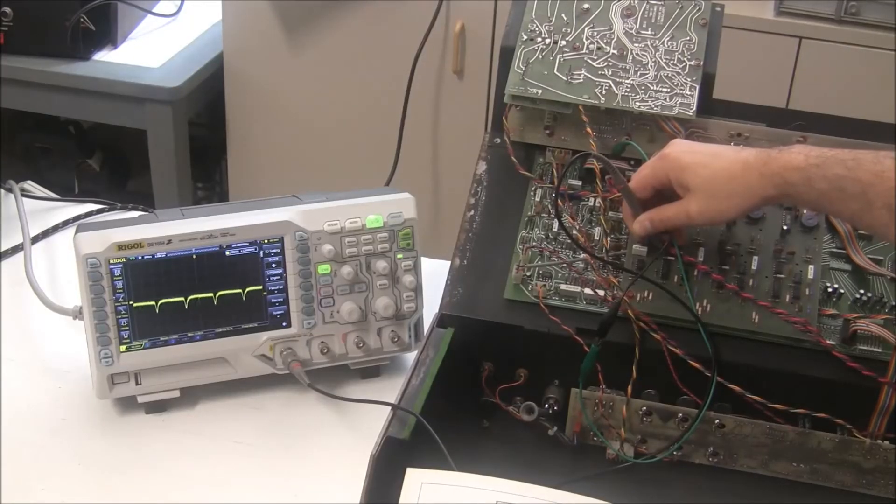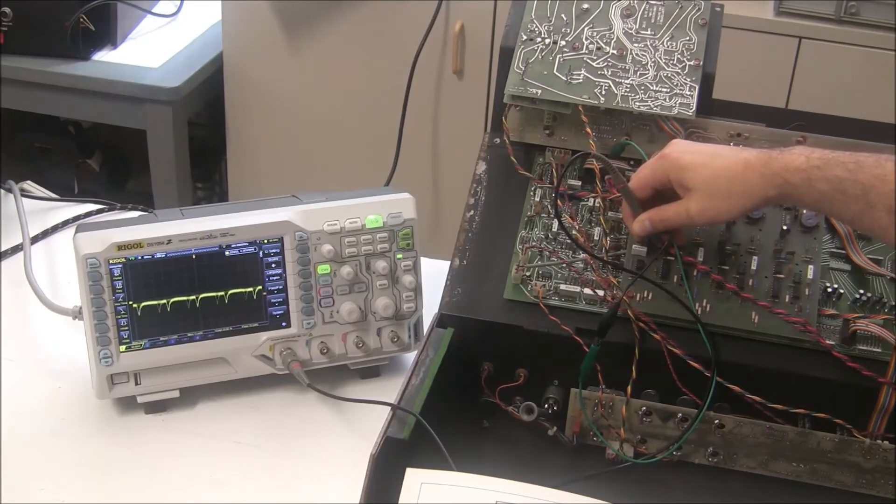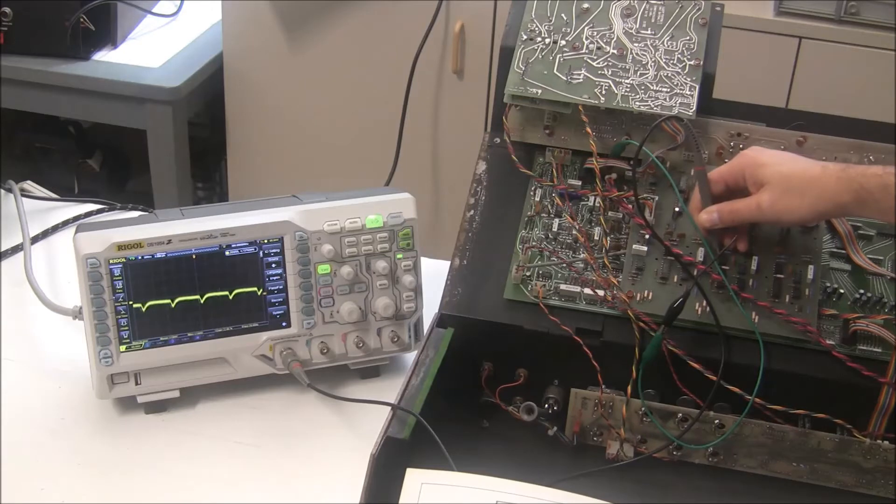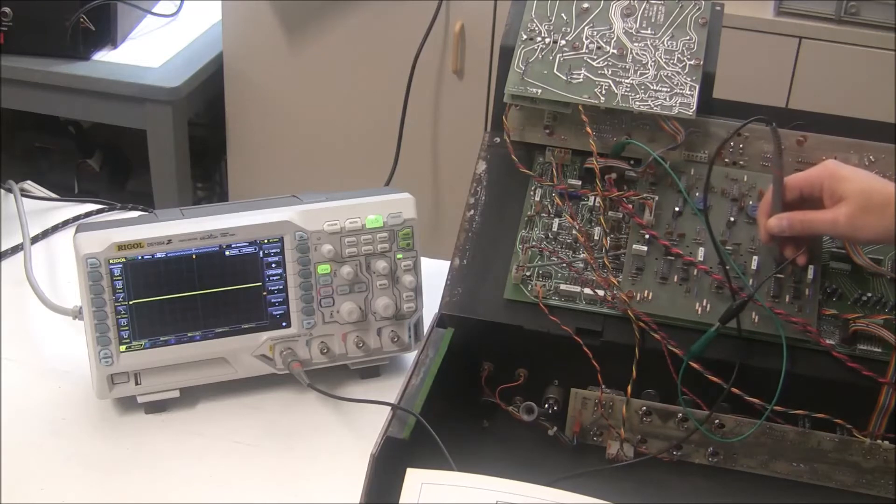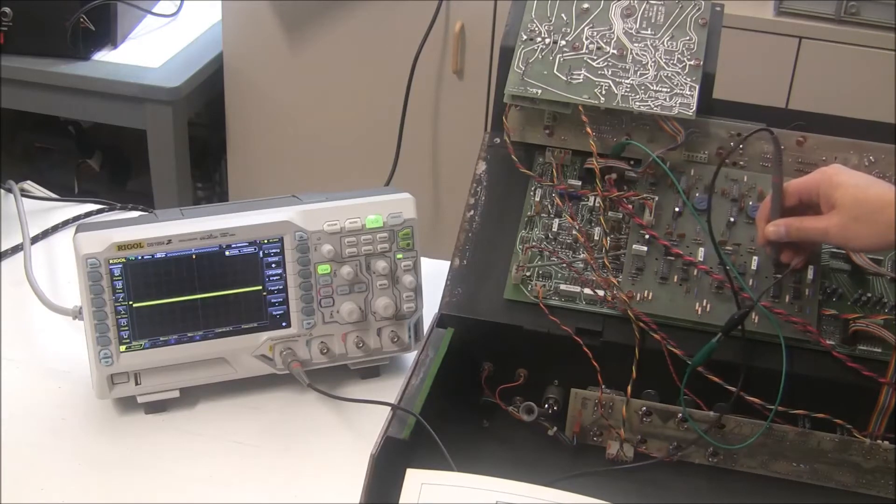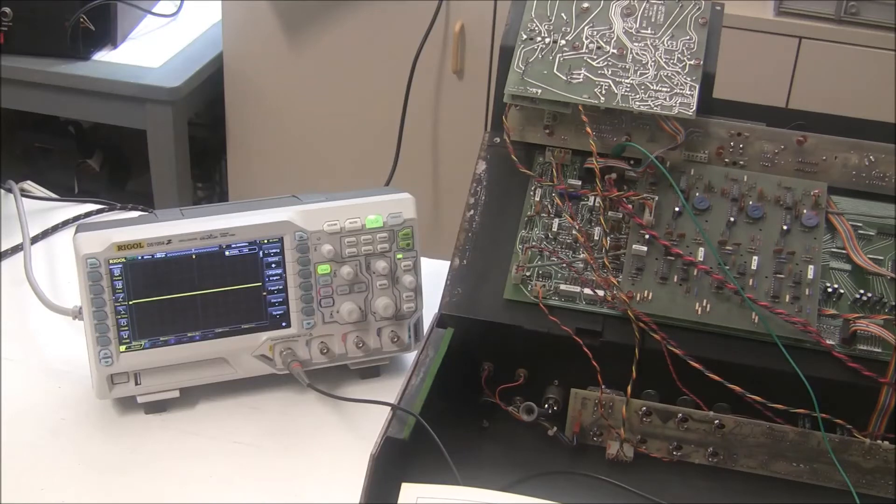So I'm on op amp 103, IC 103. This is the output of the first delay line, delay line one. And substantially the waveform looks like what it should look like. Now I'm going to hop over to the second delay line. Again, very similar waveform, looks okay. Hopping over to the third one, we're flat lined. So this third delay line is dead. And that could definitely explain the beating noise that we're hearing because we were only getting two delay lines out of this phaser.